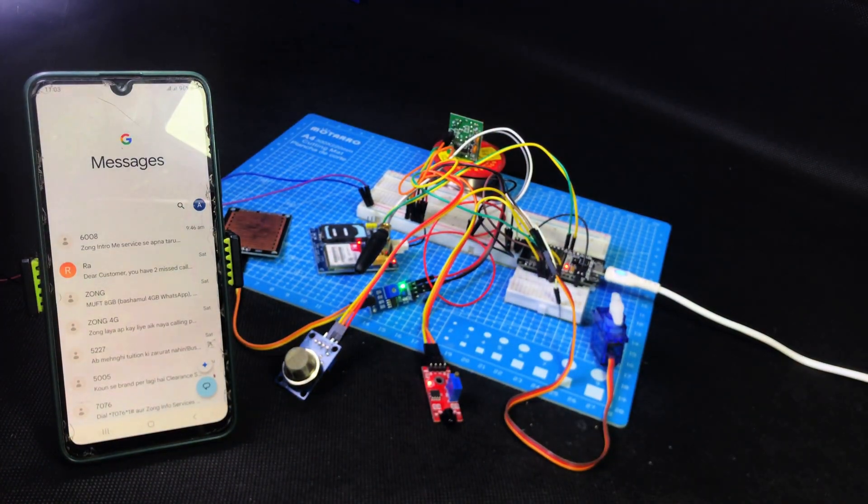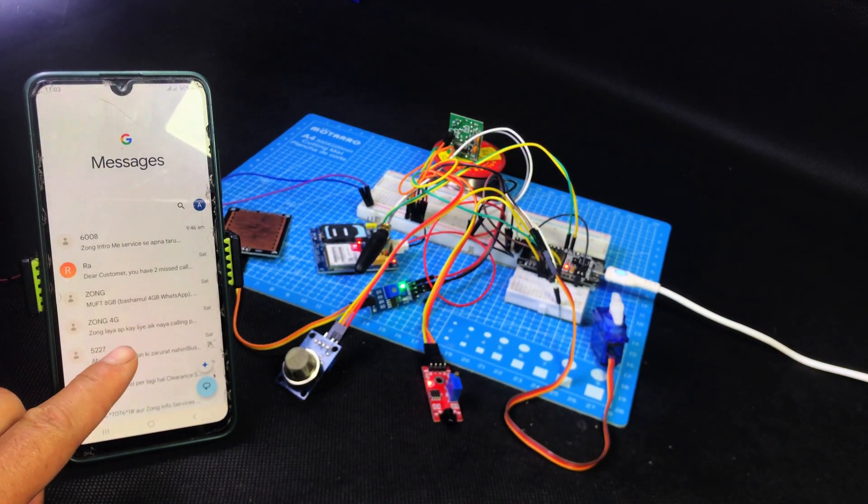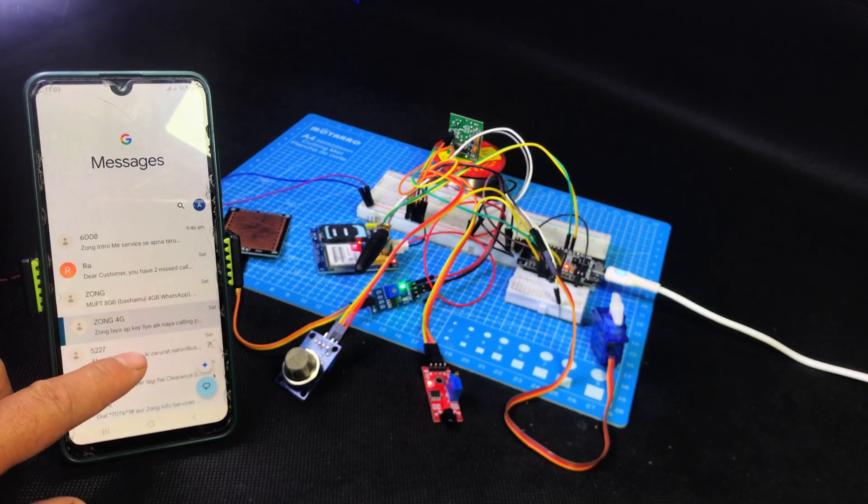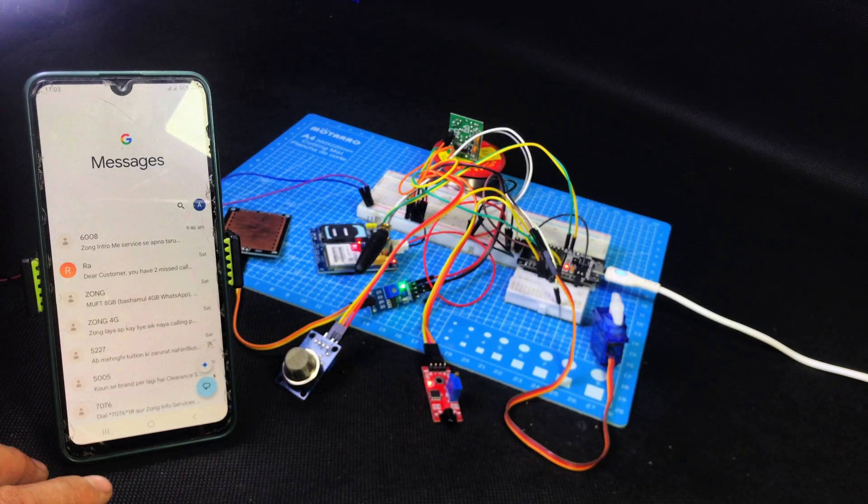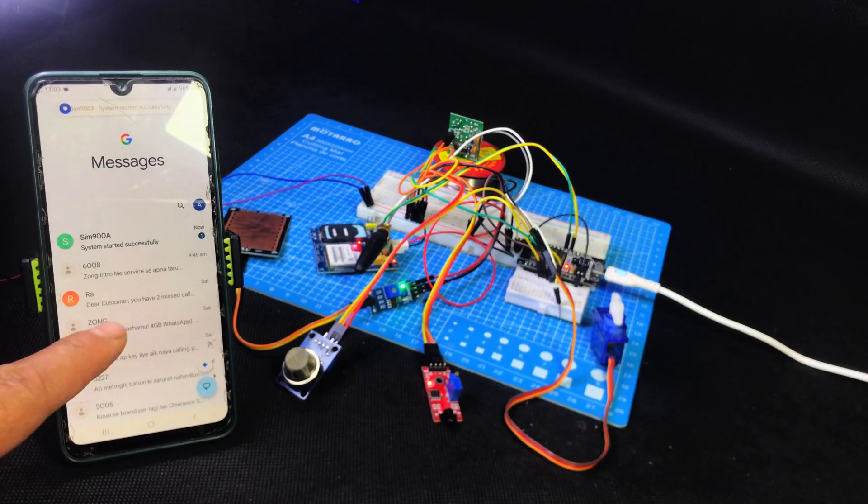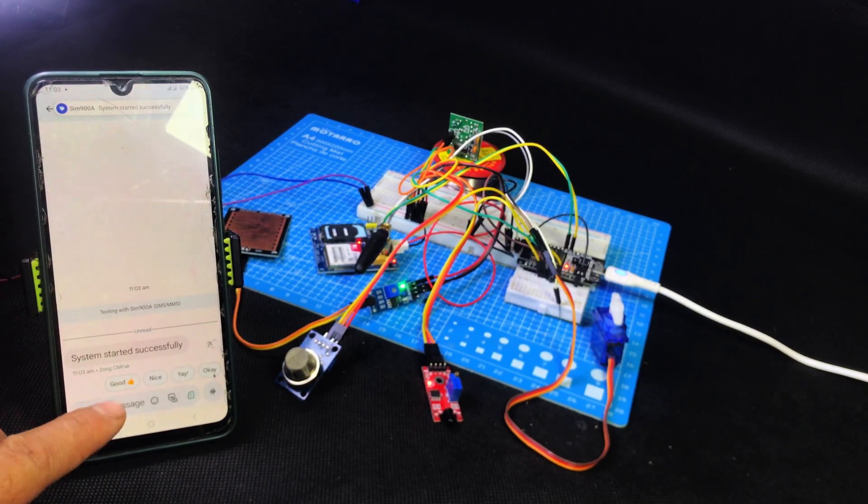Let's turn on the system. As soon as I power it on, I get the first SMS on my phone: System started successfully. This means our GSM module and ESP32 are working perfectly.